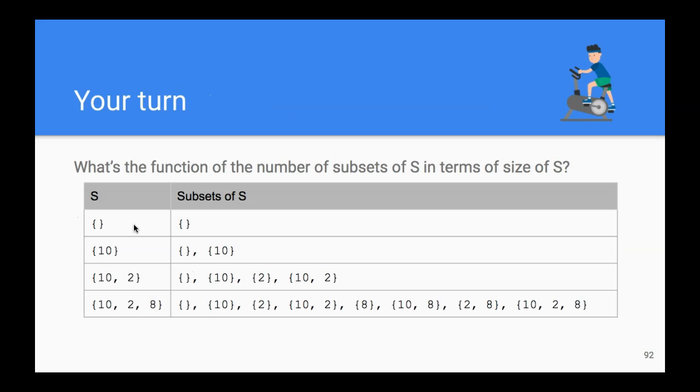Okay, so you have seen this before. This shows on the first column what might be in S and then the second column all the possible subsets for a given S. So take a look at this, think about it for a bit, and then try to figure out what kind of function the number of subsets is in terms of the number of items in S.